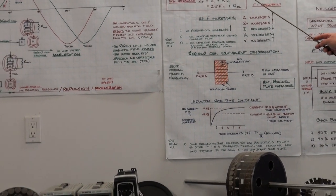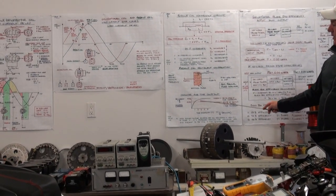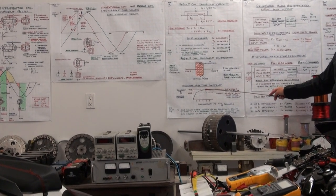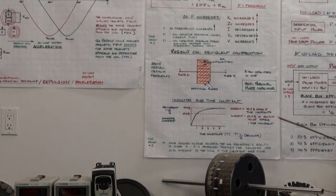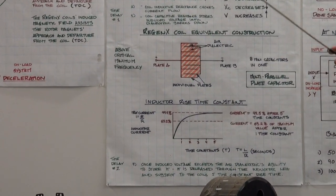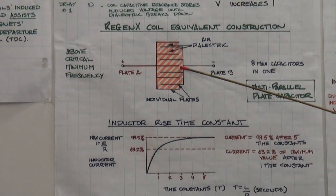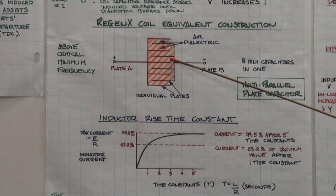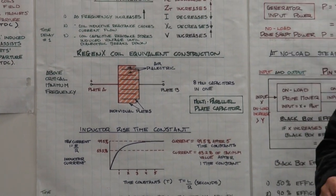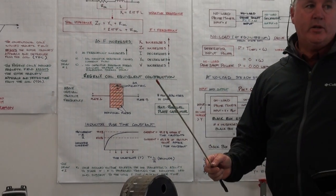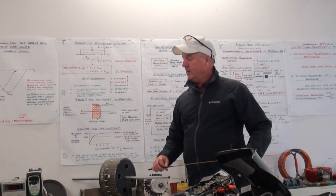When the voltage stored in the capacitance of the coil is released, it has to go through yet another delay — the inductor rise time constant. In a normal inductor where inductance is low, the five time constant rise time is very short, almost negligible. But in a Regen-X coil it's higher. You have one component of the load current delay and another; put the two together, it's just enough to reverse generator armature reaction and allow the coil to operate at infinite efficiency.